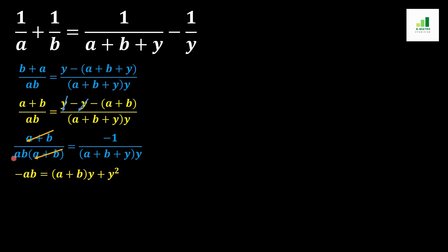In the next step we arrange this equation as y² + (a+b)·y, and -ab moves to the other side and converts to +ab. So the quadratic equation is y² + (a+b)y + ab = 0.